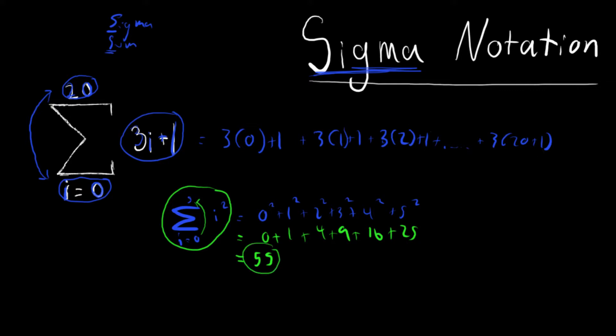And this number can be anywhere from negative infinity to infinity. And those are called infinite notations, infinite sigmas. And those have a completely separate rule of themselves, which hopefully I will cover in a future video.